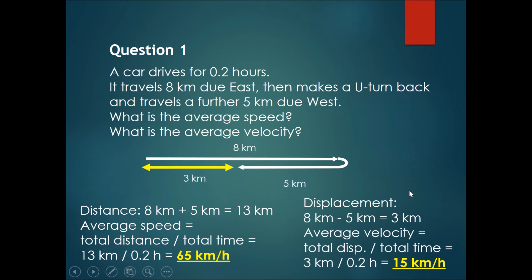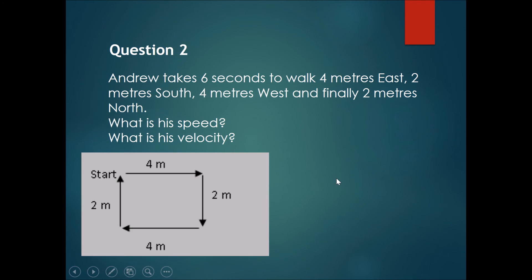However, if we asked for its average velocity, displacement would instead be 8 km minus 5 km, giving you 3 km. So the average velocity will be equal to the total displacement divided by the total time, and that will get you 3 km divided by 0.2 hours, which gets you 15 km per hour—seems much less, right?